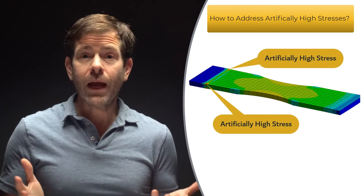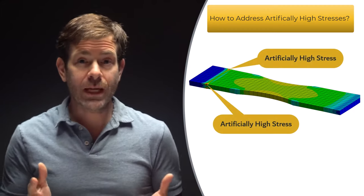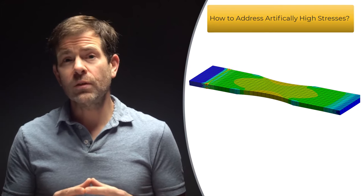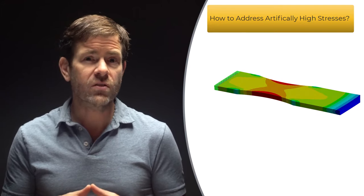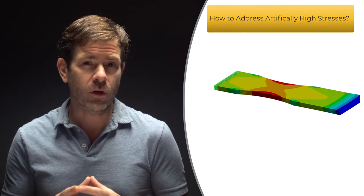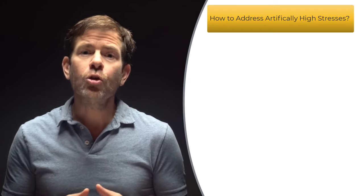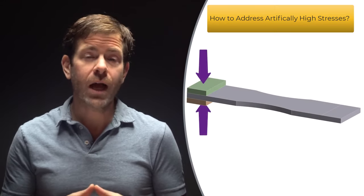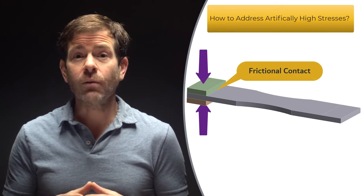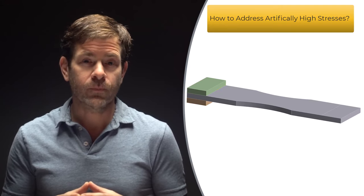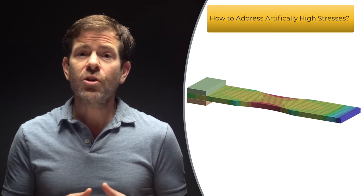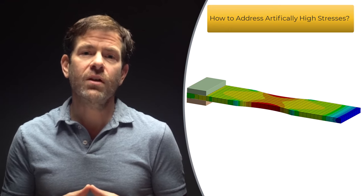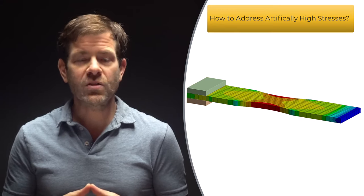To get around this, you could leave the fixed support as is and scope the results to only the region of interest, ignoring the stresses near the fixed supports. On the other hand, we can model the clamping of the grips with frictional contact, and now we are not restricting the Poisson's effect. This results in no artificially high stresses developing, and the peak stresses are where we expect them to be.